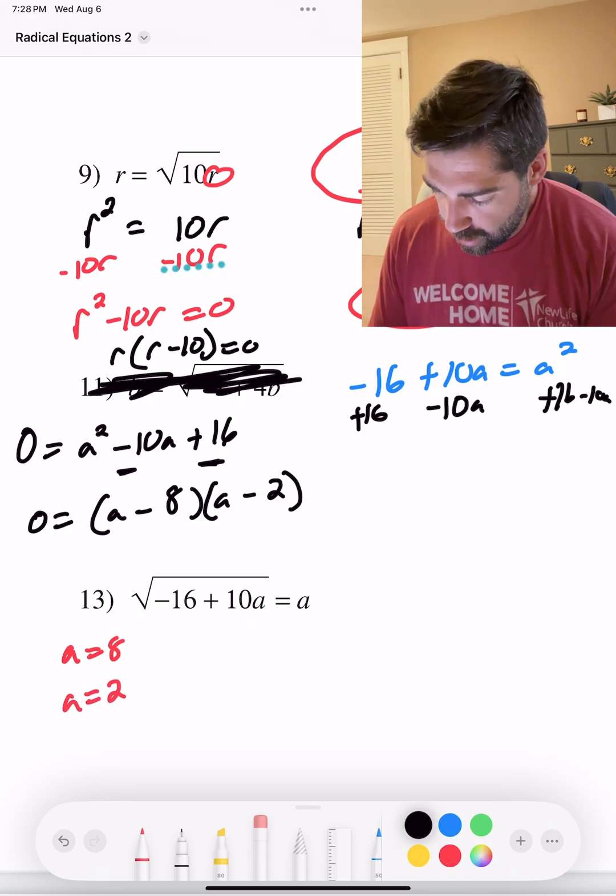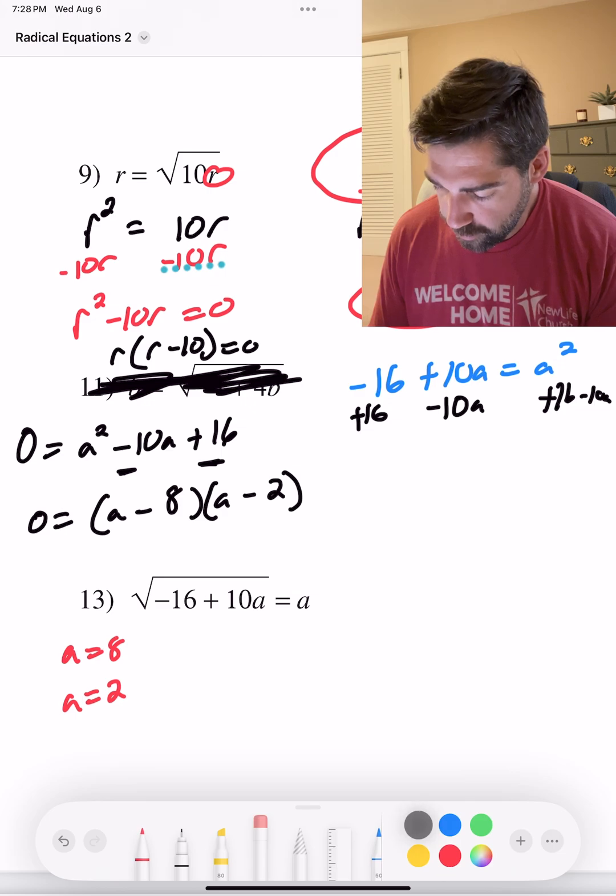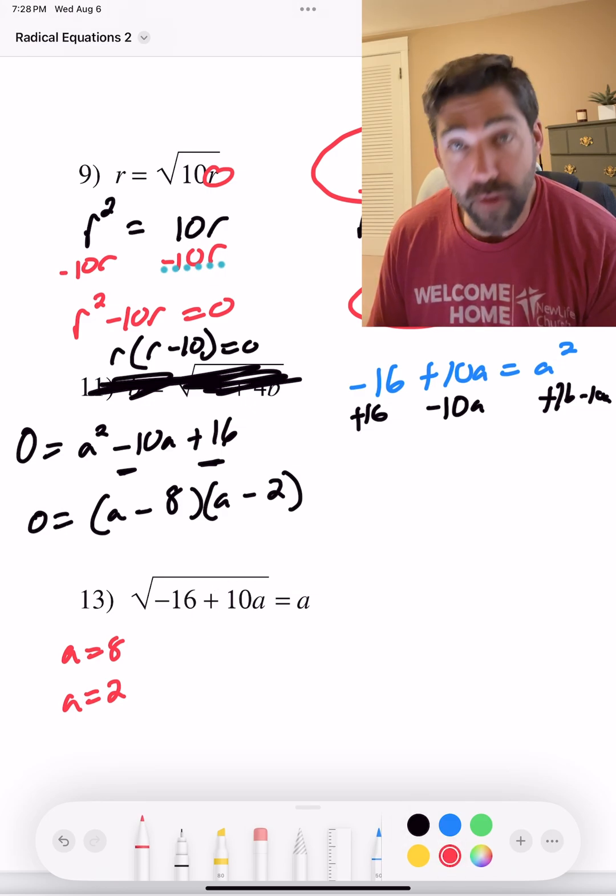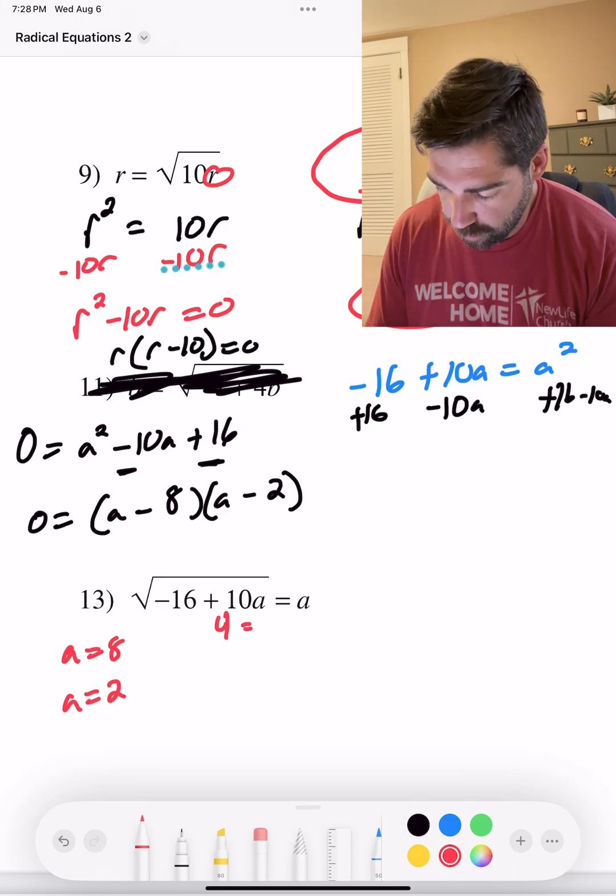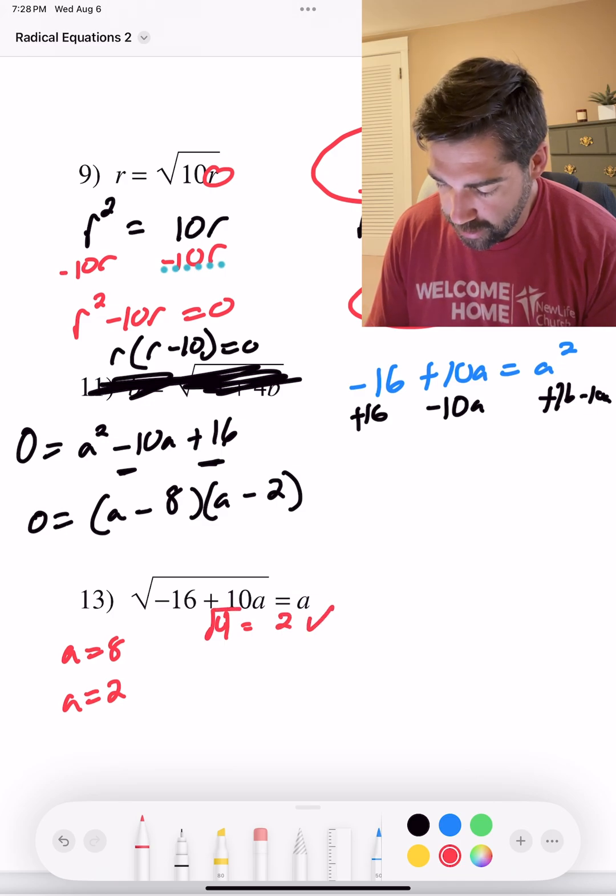Plug those in. If we plug in two, that's 20. Negative 16 plus 20 is four, four square root. Does that equal two? Yes, it does. So two works.